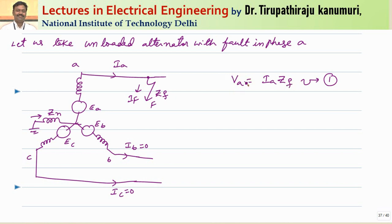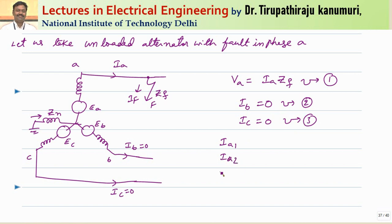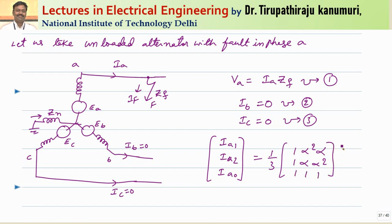So I am taking the case of fault impedance, but in practice most books take ZF equal to 0, which is why they write VA equal to 0 — please do not confuse. The second condition is that IB and IC are not affected, so IB equal to 0 as well as IC equal to 0. These are the conditions obtained from this particular case. We have already derived in our previous lectures the value of IA1, IA2, and IA0 — the sequence components can be represented by (1/3) times the matrix [1, α², α; 1, α, α²; 1, 1, 1] times [IA, IB, IC]. This is equation number 4.